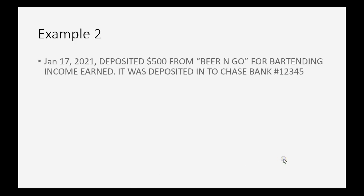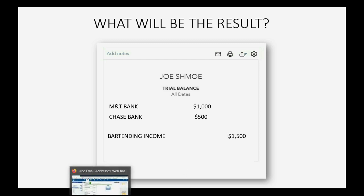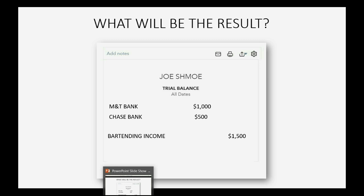Let's do another example. Let's imagine on January 17th we deposited $500 from the Beer and Go, also for bartending income, and it was deposited to Chase Bank. You're also supposed to type in a number in the number field. So what will be the result? Chase Bank will show up for the first time as $500, and bartending income will become $1,500 because we earned $500 more.